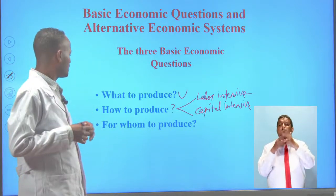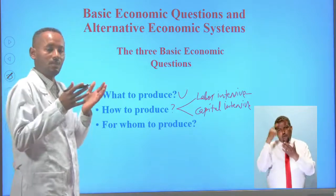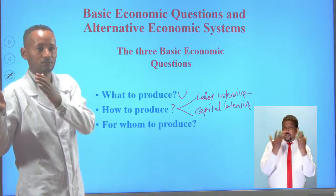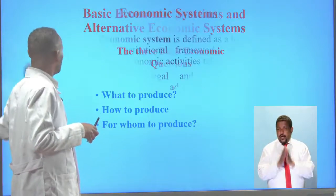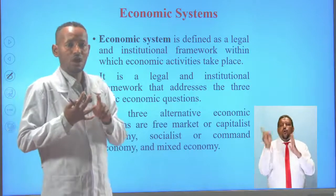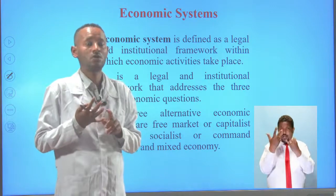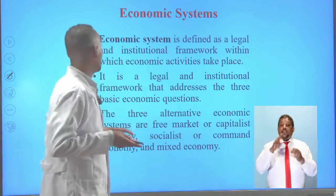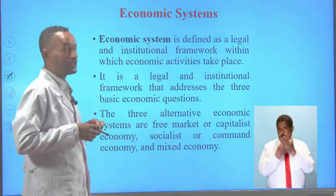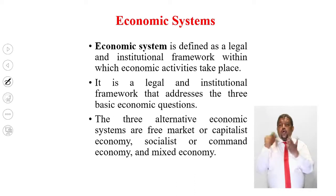The third basic economic question is for whom to produce — for the poor or the rich. These three basic economic questions are answered by three alternative economic systems: capitalist economy, command economy, and mixed economy. An economic system is defined as a legal and institutional framework within which economic activity takes place, addressing the three basic economic questions.